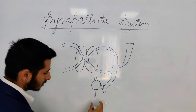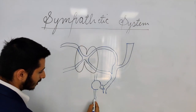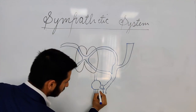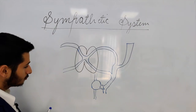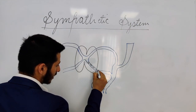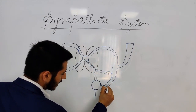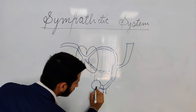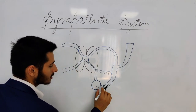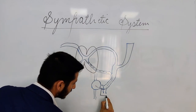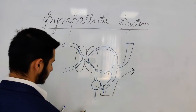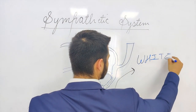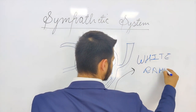This trunk runs to the end of the vertebral column at the ganglion impar, starting from the base of the skull or base of the brain. The passage through which these preganglionic fibers travel into the sympathetic trunk is through a small structure called the white ramus communicans.